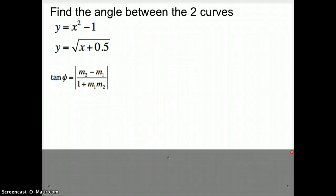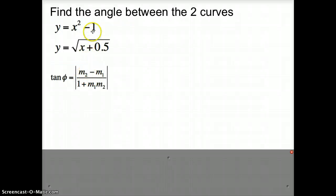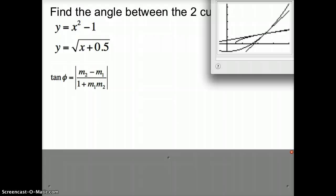We're going to look at trying to find the angle between two curves using derivatives. Here are my two curves, and this is the formula we're going to use. Remember, m1 and m2 are going to be the slope of the tangent line at the intersection point of these two curves. So the first thing I have to do is find the intersection point.